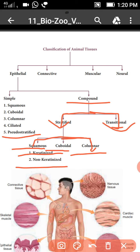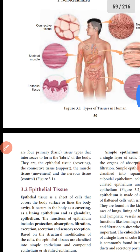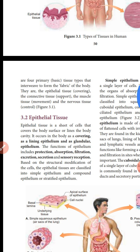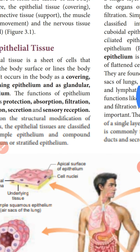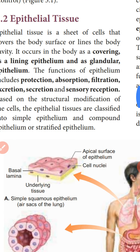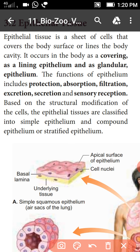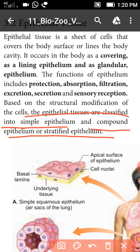Now let's discuss each one by one. The epithelial tissues have two types — I already told you: one is simple epithelium and another one is compound or stratified epithelium.